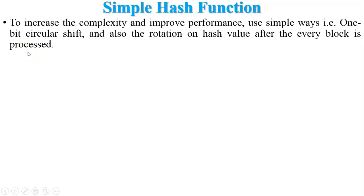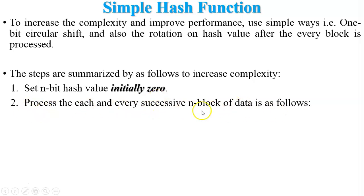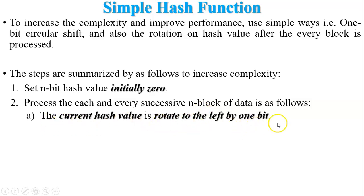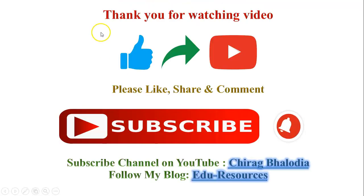To increase complexity and improve performance, a second hash function uses a one-bit circular shift and rotation of the hash value after every block is processed. The steps are: first, set the n-bit hash value to all zeros; then, for each successive n-bit block, rotate the current hash value left by one bit, and then XOR the block with the hash value. This increases the complexity and improves the performance of the hash function. Thank you for watching — please like, share, comment, and subscribe to my YouTube channel.